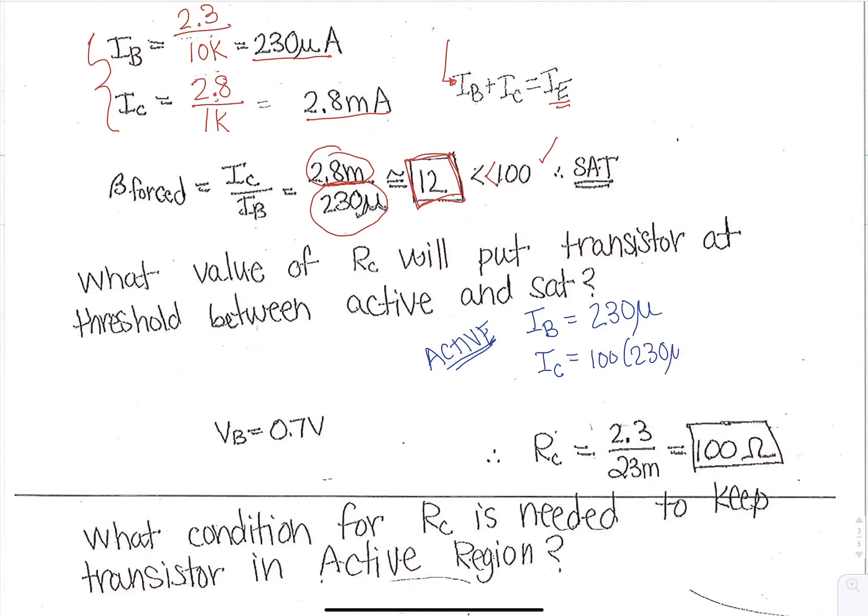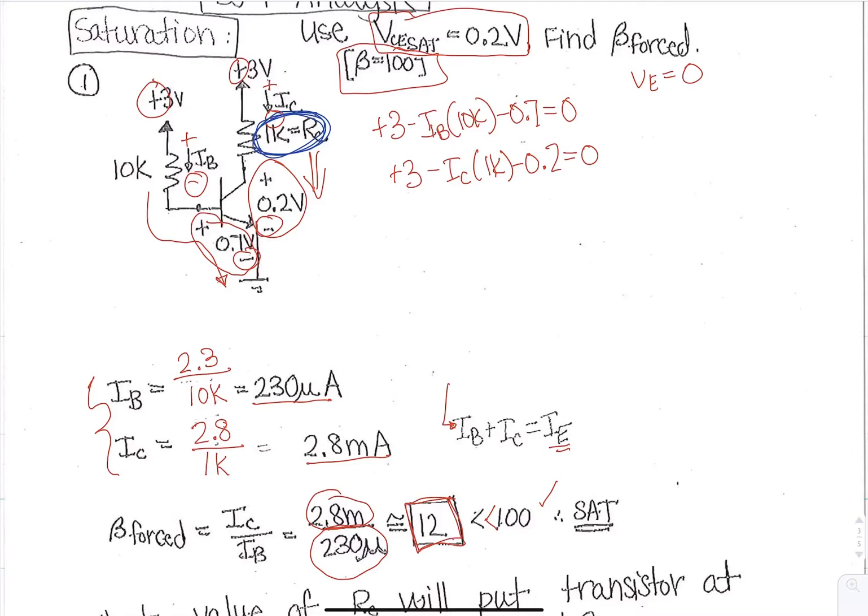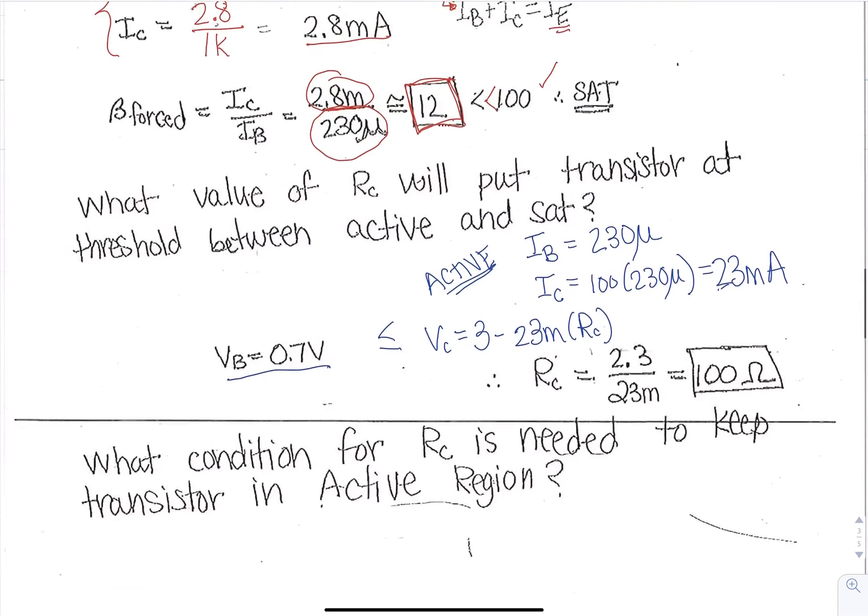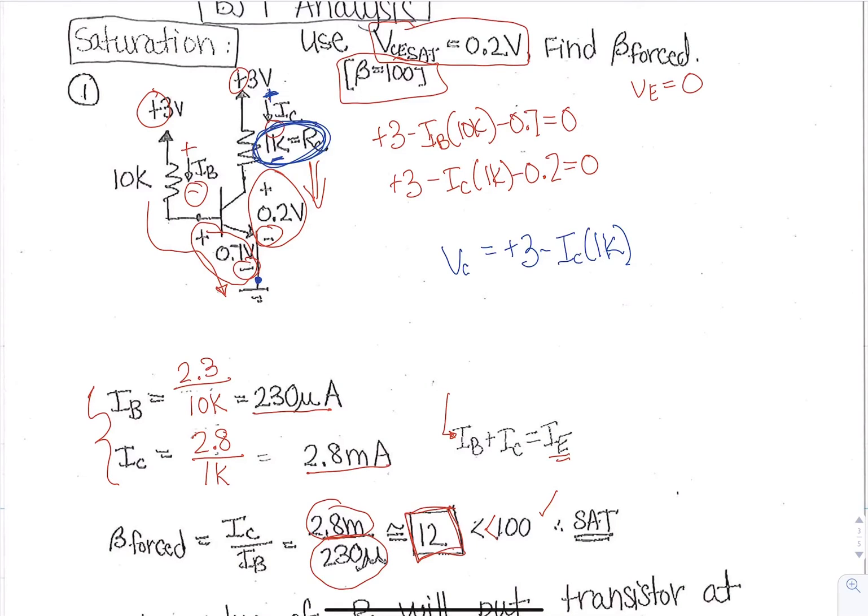The VC equation is going to be plus 3 minus IC times RC. So we can use the VC of 3 minus IC, which is 23 milli times our unknown RC. This value needs to be greater than or equal to VB, which is going to be 0.7 volts, and that's because VE is 0, VB is that 0 plus 0.7.